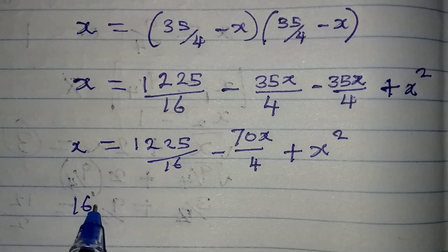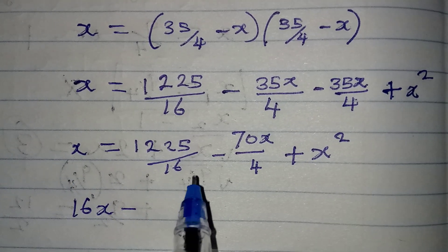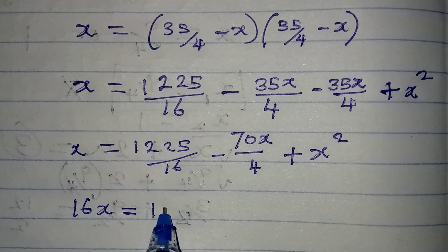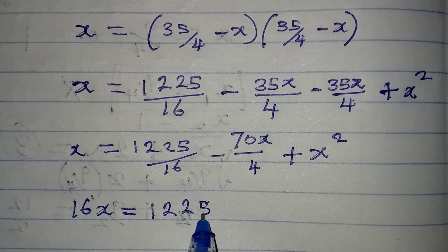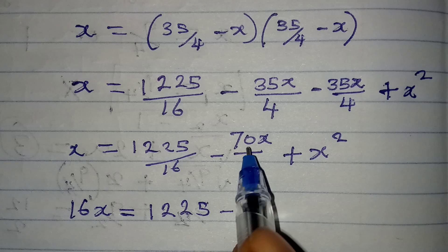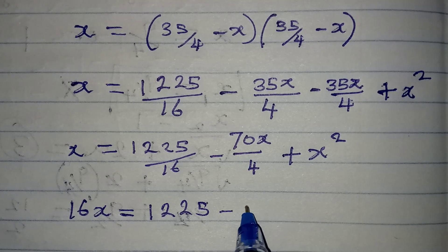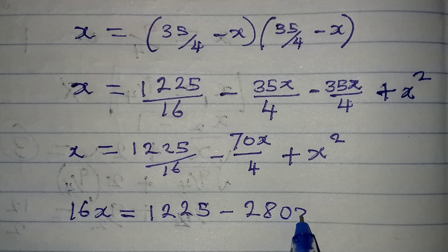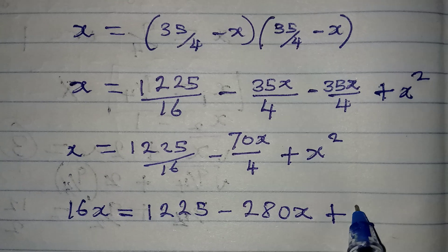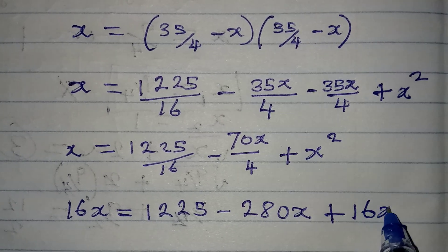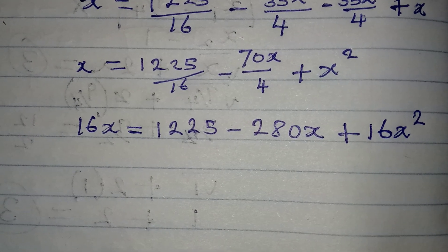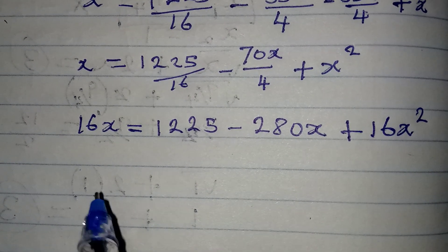We deal with it by multiplying through by the LCM, which is 16. So 16 times x gives 16x. The 16 cancels with the 16 on the right, giving 1225. Then 16 divided by 4 is 4, and 4 times 70x gives 280x, plus 16x squared.